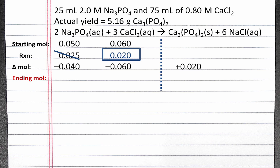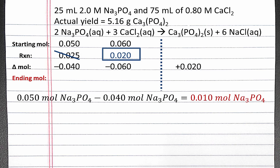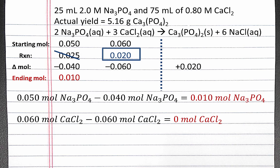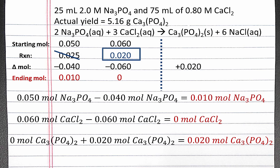Next, we'll calculate the ending moles. We begin with 0.05 moles of sodium phosphate and use up 0.04 moles, so we'll have 0.01 moles of sodium phosphate remaining. For the limiting reagent, calcium chloride, we begin with 0.06 moles and use up all 0.06 moles, so for the limiting reagent we don't have any remaining. And for calcium phosphate, we begin with 0 moles, produce 0.02 moles, and end with 0.02 moles of calcium phosphate.